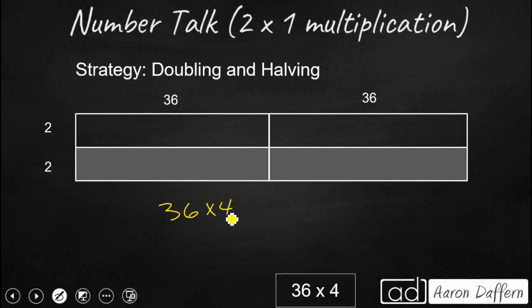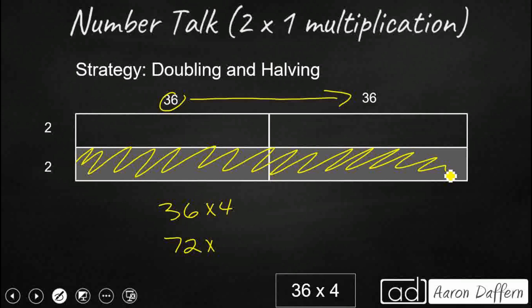So what we did is we took our 36 right here and we doubled it. So 36 doubled is 72. But in order to keep our equation balanced, we had to take our 4 and take away half of it. That is what we did right here. And that goes down to 2. So we doubled our 36, we took our 4, cut it in half, and guess what we get? Our same answer of 144. So doubling and halving is a great strategy. It doesn't always work, but when it does, it is pretty easy.